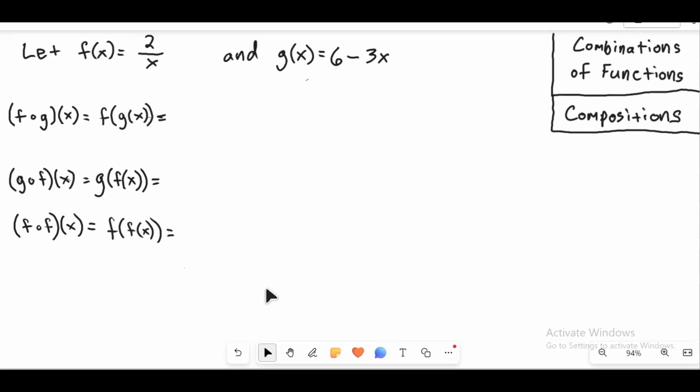In this video, we're going to do a couple more examples. We've got f of g of x here. But this time, f(x) is a rational function, 2 over x. This is going to introduce just a tiny complication in one or two of these.